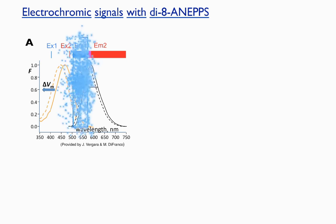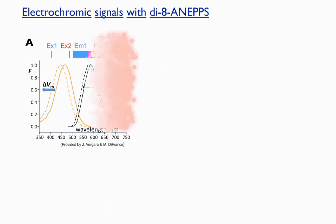Thus, in the region marked emission 1, the change will be an increase, and in emission 2, a decrease upon depolarization.